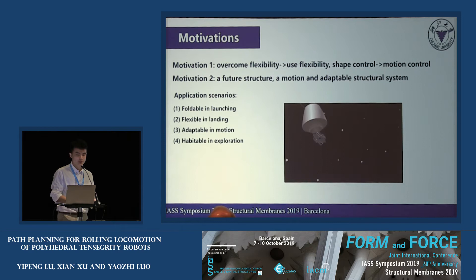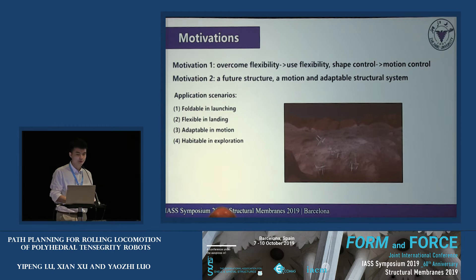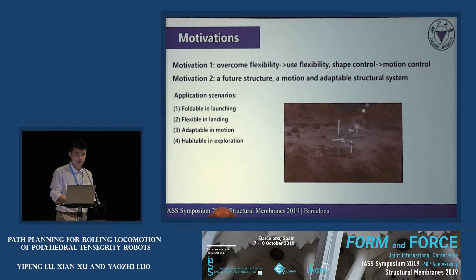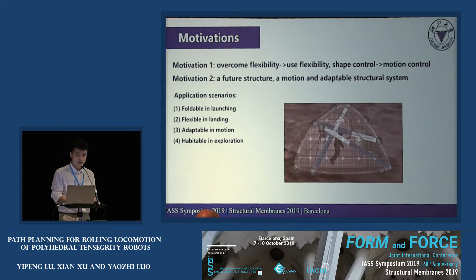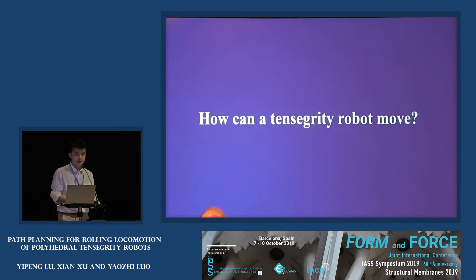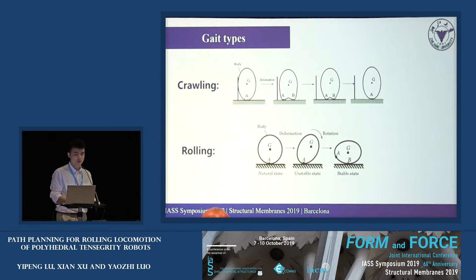What is the motivation for developing dynamic tensegrity? In the past, it was used to control the shape of structures, but now we would like to make use of them in the field of planetary exploration, where a motion-adaptable system is needed. It has the following advantages: foldable in launching, flexible in landing, adaptable in motion, and habitable in exploration. We can imagine that in the future, a tensegrity robot could be used as a planetary rover. When arriving at the destination, it can be settled in as temporary residence.